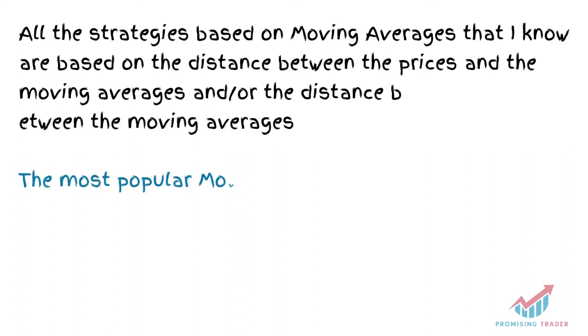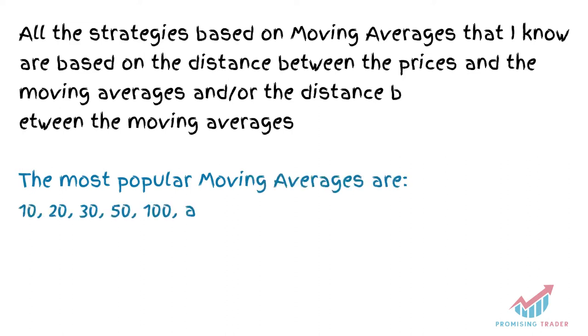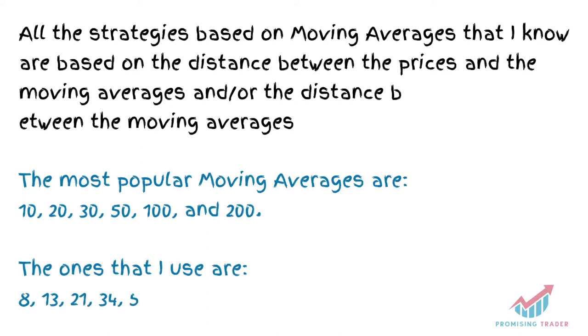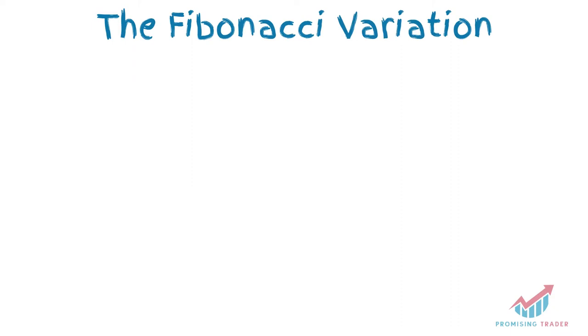The most popular moving average lengths are 10, 20, 30, 50, 100, and 200. If you have watched any of my technical analysis, you may have noticed that I use 8, 13, 21, 34, 55, and 233 — which are the Fibonacci variation.